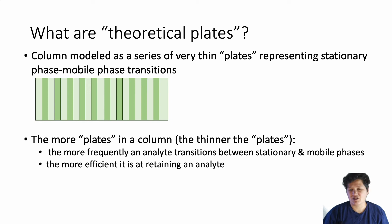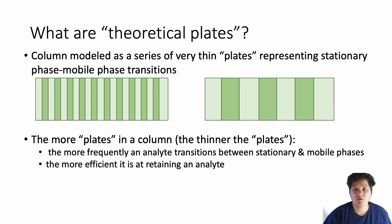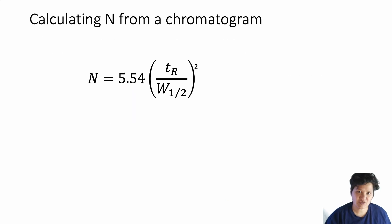A thin plate means it doesn't go very far before it gets stuck again. Another way to think about this is that a column with a lot of theoretical plates holds onto your analyte pretty well because it keeps getting stuck. Whereas a column with only a few theoretical plates doesn't hold onto it as well. So these plates are theoretical plates. How do we actually measure them?